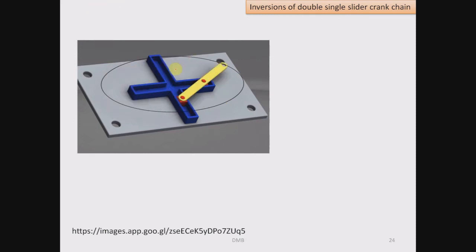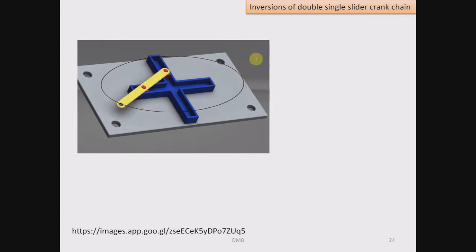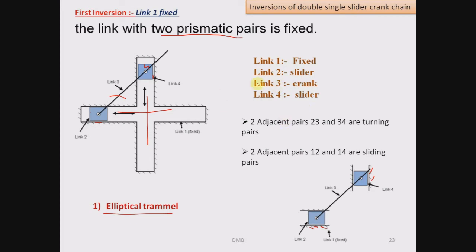Any point except the center point of this yellow link will move along an elliptical path, hence it is called as elliptical trammel. So here link 1 is fixed, link 2 is slider, link 4 is slider and link 3 is crank. The two adjacent pairs formed by link number 2 and 3, and 3 and 4 are turning pairs. The other two adjacent pairs formed between link number 1 and 2, and 1 and 4 are sliding pairs. This is the characteristic of double slider.